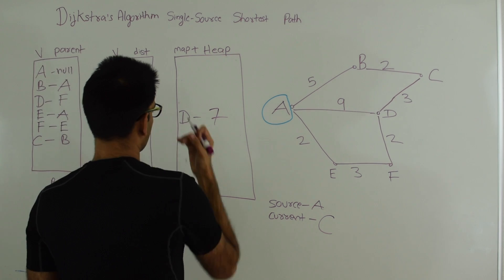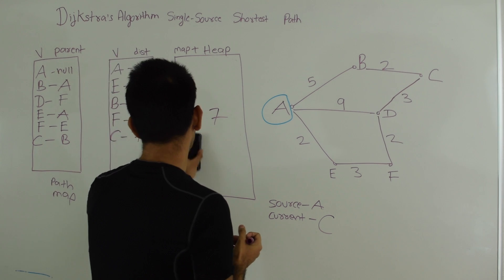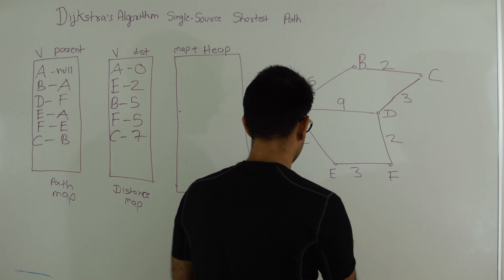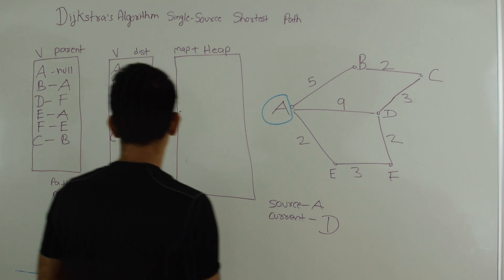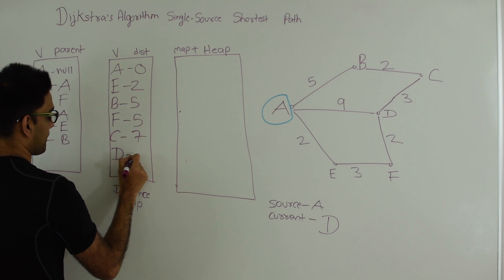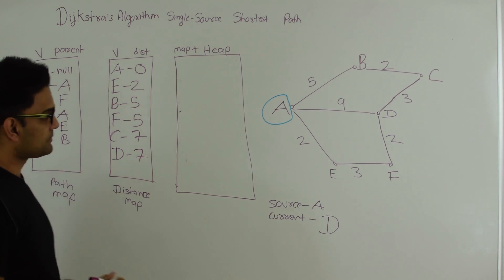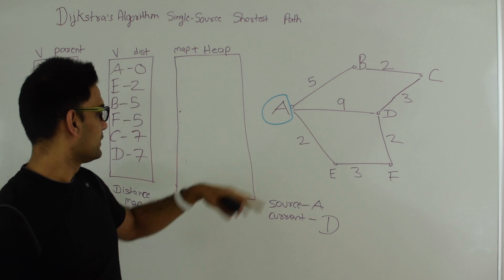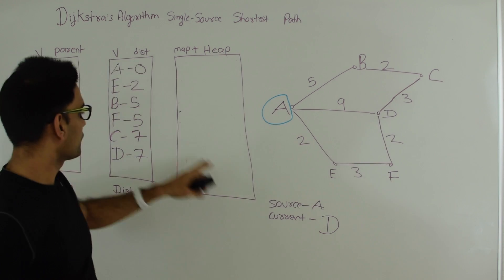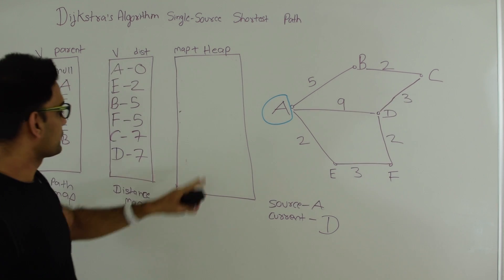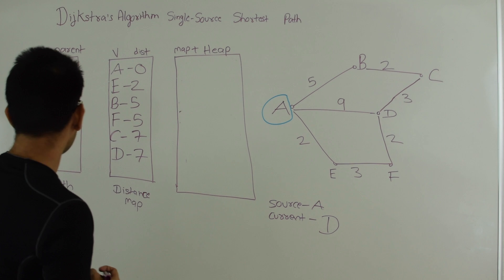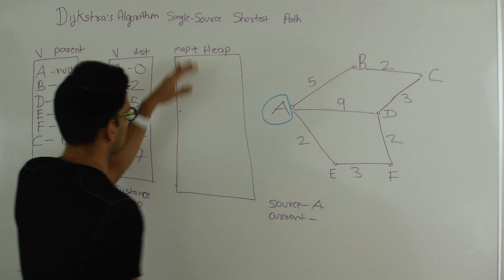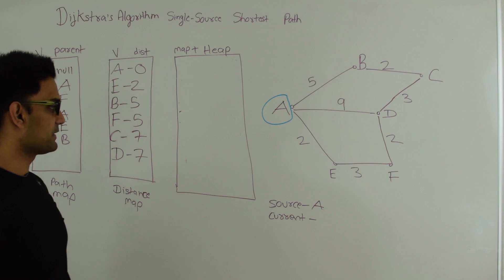Finally we do an extract min and D comes out with value 7. D explores its neighbors: A, F, and C — but none of them exist in the heap anymore. So at this point we're done with the algorithm because the data structure is now empty.